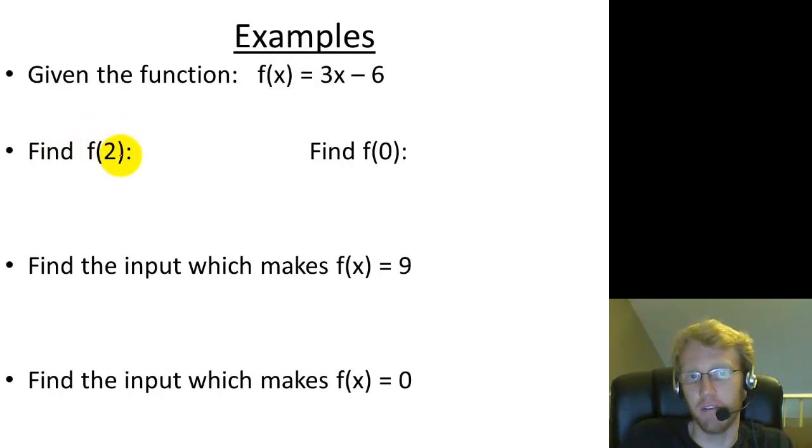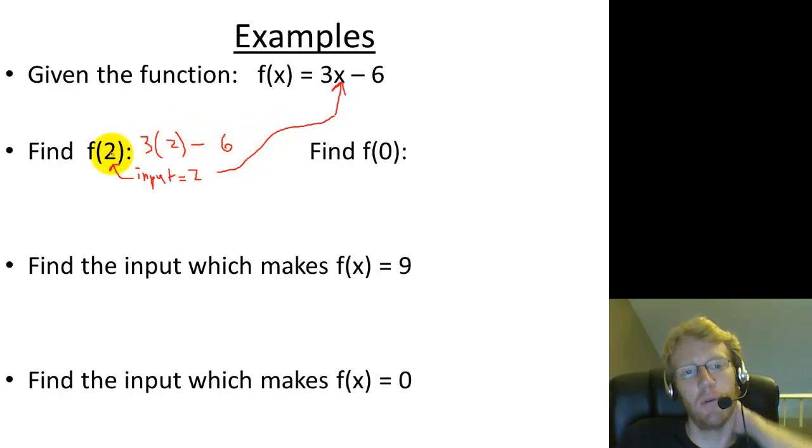If you see something that says find f of 2, well the number in the parentheses is the input, we just said that. So the number in the parentheses is 2, which means the input is 2. Okay, if the input is 2, we input it into this equation right here, we input right here, and so we just get 3 times 2 minus 6. So what I'm doing is I'm inputting the input value in place of the input variable x, and I get 3 times 2, which is 6, 6 minus 6, which equals 0.